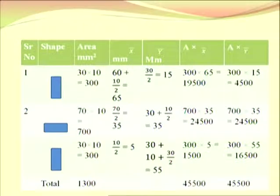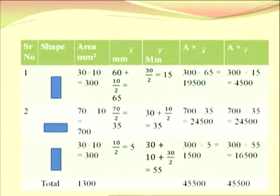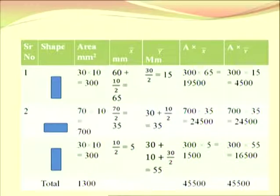For figure number 2, the horizontal rectangle has dimensions 70 by 10, so the area is 700. The X2 coordinate is 70 by 2, equal to 35. A2×X2 equals 700 into 35, equal to 24,500. The Y2 coordinate is also 35, so A2×Y2 equals 700 into 35, equal to 24,500.